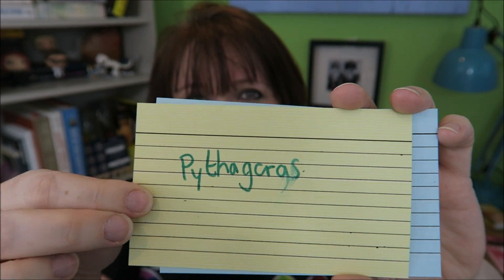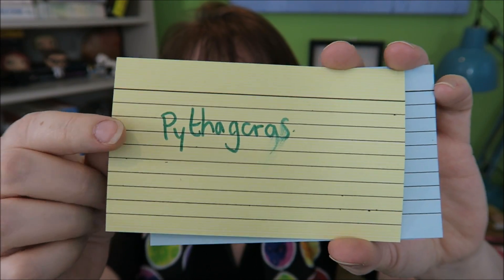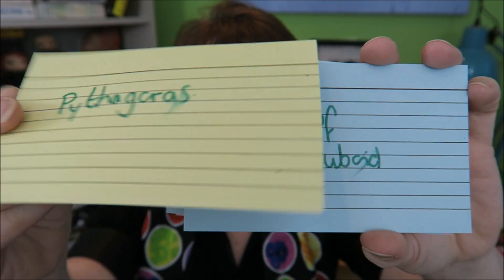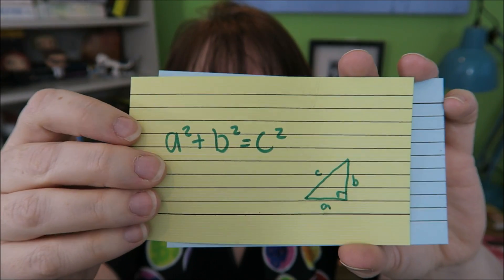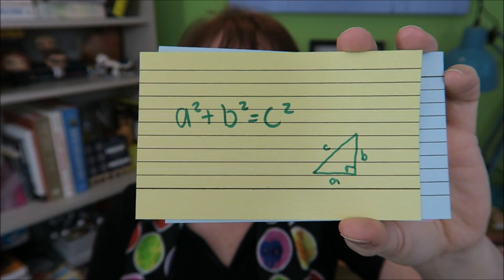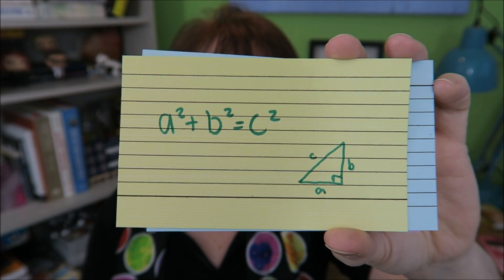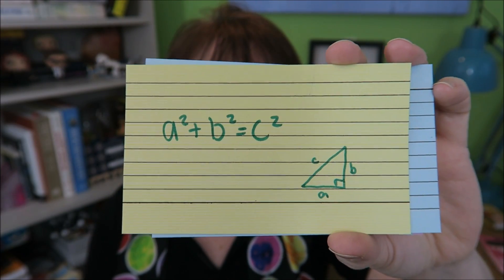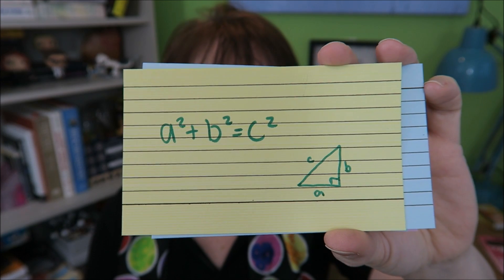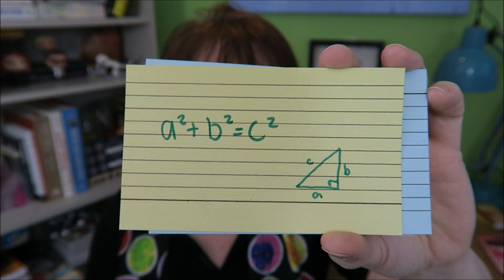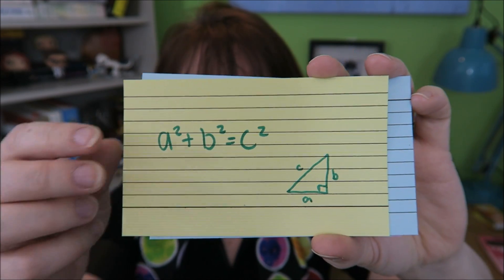Pythagoras' theorem. Again, this is a right-angled triangle, and it is A squared plus B squared equals C squared, where C is the hypotenuse.